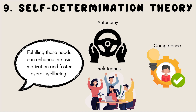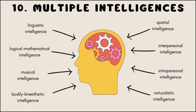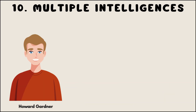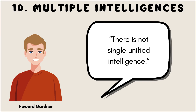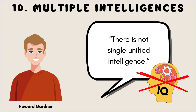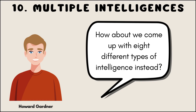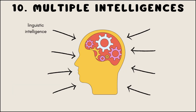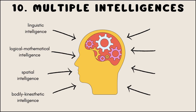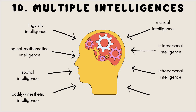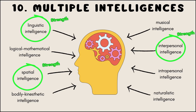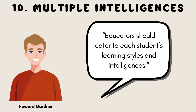Fulfilling these needs can enhance intrinsic motivation and foster overall well-being. Multiple intelligences theory, developed by Howard Gardner, challenges the traditional notion of a single unified intelligence. It proposes that individuals possess a range of intelligences including linguistic, logical-mathematical, spatial, bodily-kinesthetic, musical, interpersonal, intrapersonal, and naturalistic, suggesting that education should cater to these diverse learning styles and intelligences.